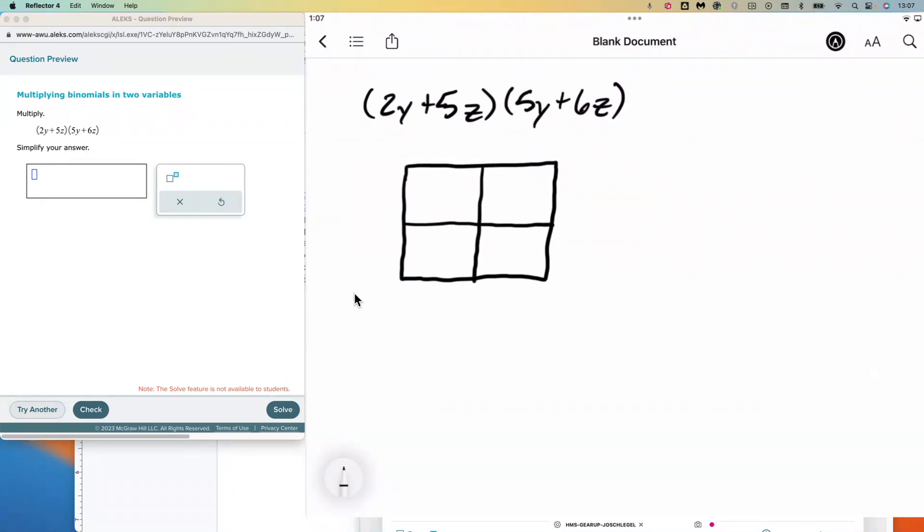So here we've got 2y plus 5z, and then 5y plus 6z. Again, the sign stays with it—since it's all plus signs I don't need to write them, I can just assume positivity. So then we just fill in the boxes. Five times two is ten, y times y is y squared.